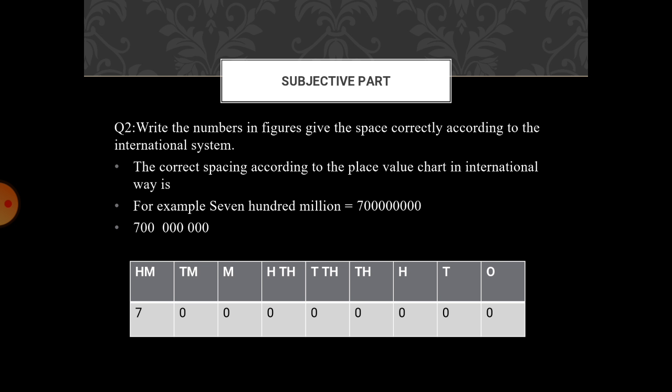Question number 2, write the numbers in figures given in the space. Give the correctly space according to the international period. You have to know about what are the international way of placing the digits. I have done first part for your understanding. The part 1 is 700 million.